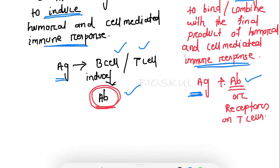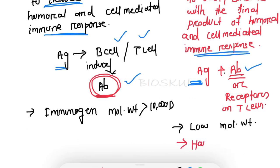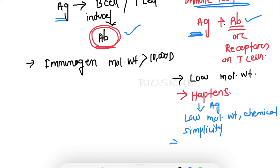Another difference is that to be an immunogen, the molecular weight should be higher. Immunogens have a molecular weight greater than 10,000 Daltons, but antigens can have a low molecular weight. For example, haptens are antigens but they are not immunogens, because of their low molecular weight as well as chemical simplicity.